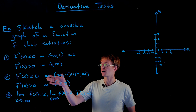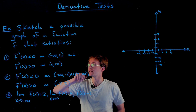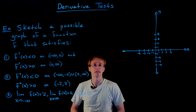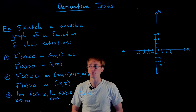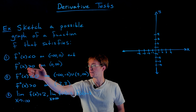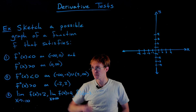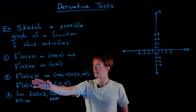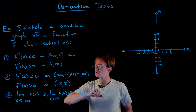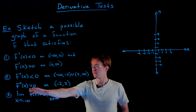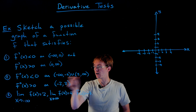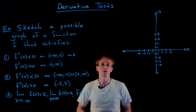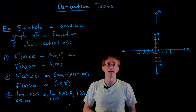The conditions our graph has to meet: the first derivative has to be less than zero on the interval from negative infinity to zero; the first derivative has to be positive on the interval from zero to infinity; the second derivative is negative on two intervals and positive on one interval. We also have some limit conditions and a point the function has to go through.